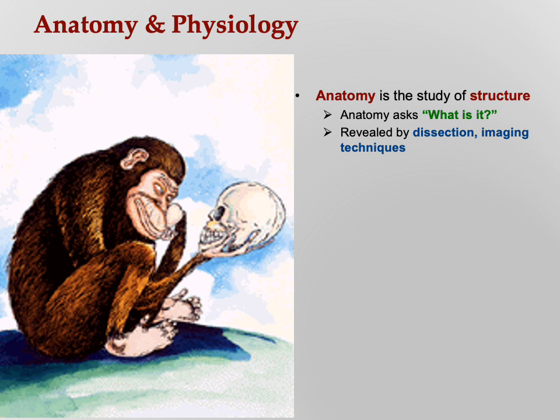So how do we know about anatomy? By dissection and by imaging techniques. We look at all the parts of the body and name them — everything in your body has a name. That's how we can talk to each other about the human body. We're going to cover typical human anatomy, and some disorders, but mostly we leave that to a class called pathophysiology that some of you will take later.